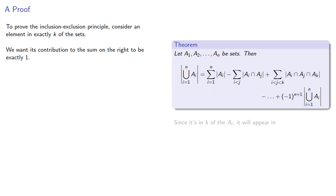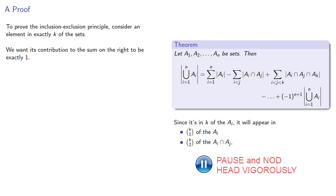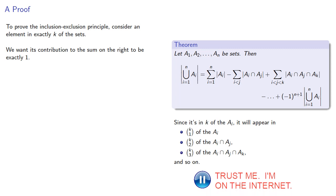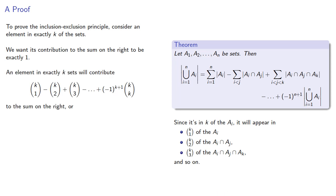Since the element is in k of the sets A_i, it's going to appear in k choose 1 of the sets A_i, k choose 2 of the pairwise intersections, k choose 3 of the triple intersections, and so on. And so an element in exactly k of the sets will contribute to the sum on the right.